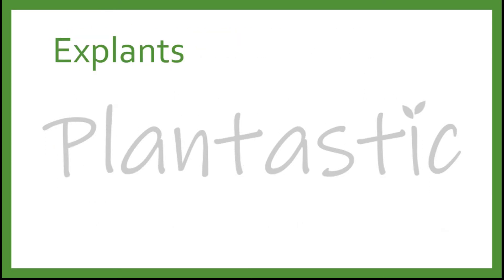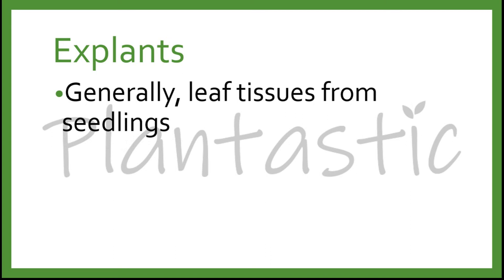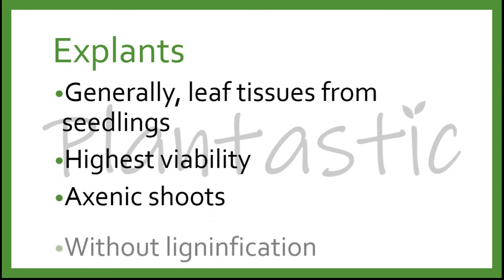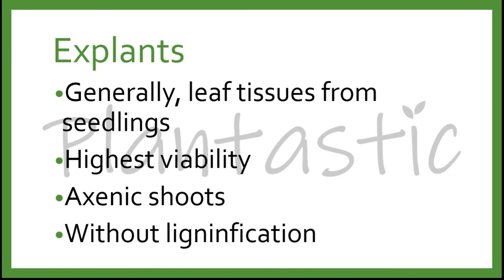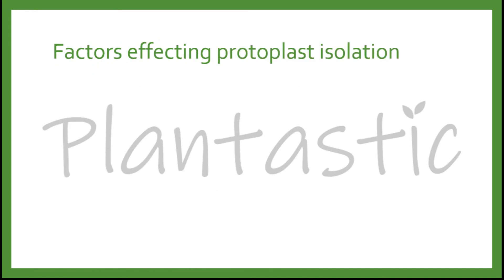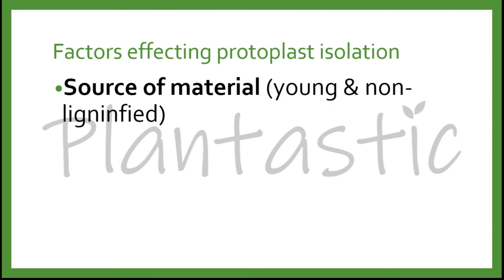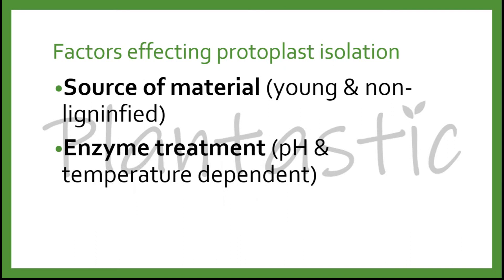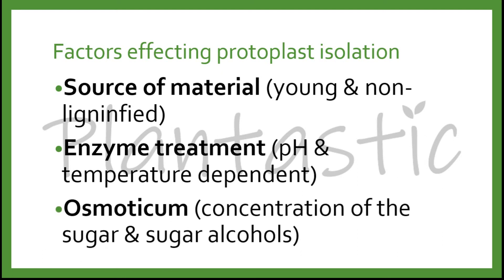The explants are generally leaf tissues from seedlings, which have the highest viability, or they can be etiolated or other explants without lignification. There are several factors that affect protoplast isolation. First, the source of the material must be young and non-lignified. Secondly, enzyme treatment, in which the pH and temperature are very crucial. Third is the osmotic agent, in which the concentration of sugar and sugar alcohols plays a major role in osmotic concentration.